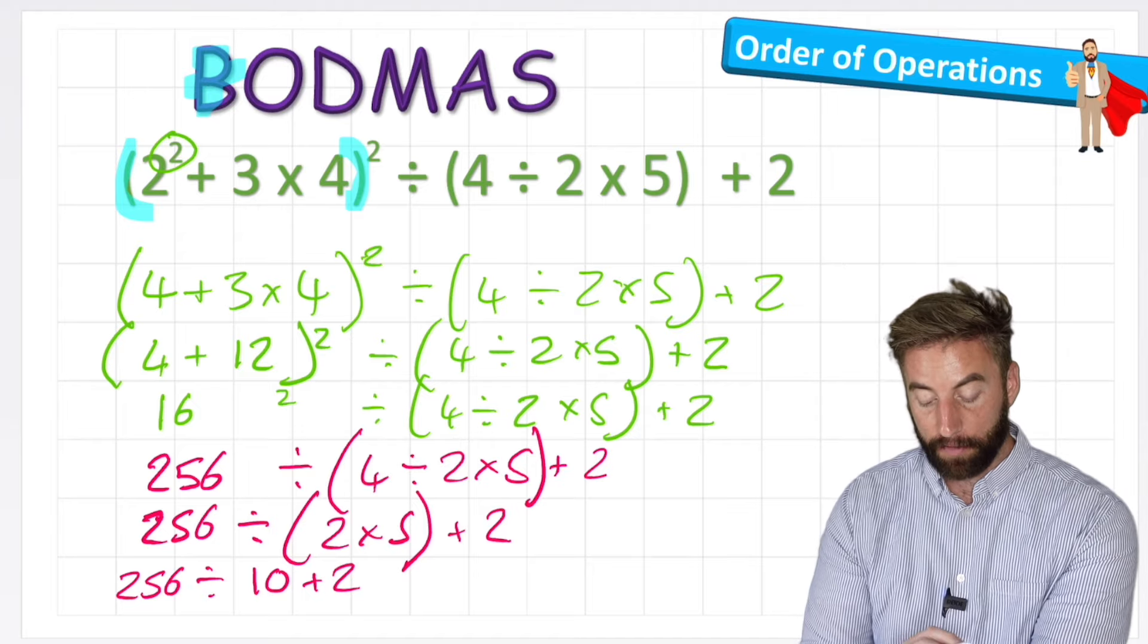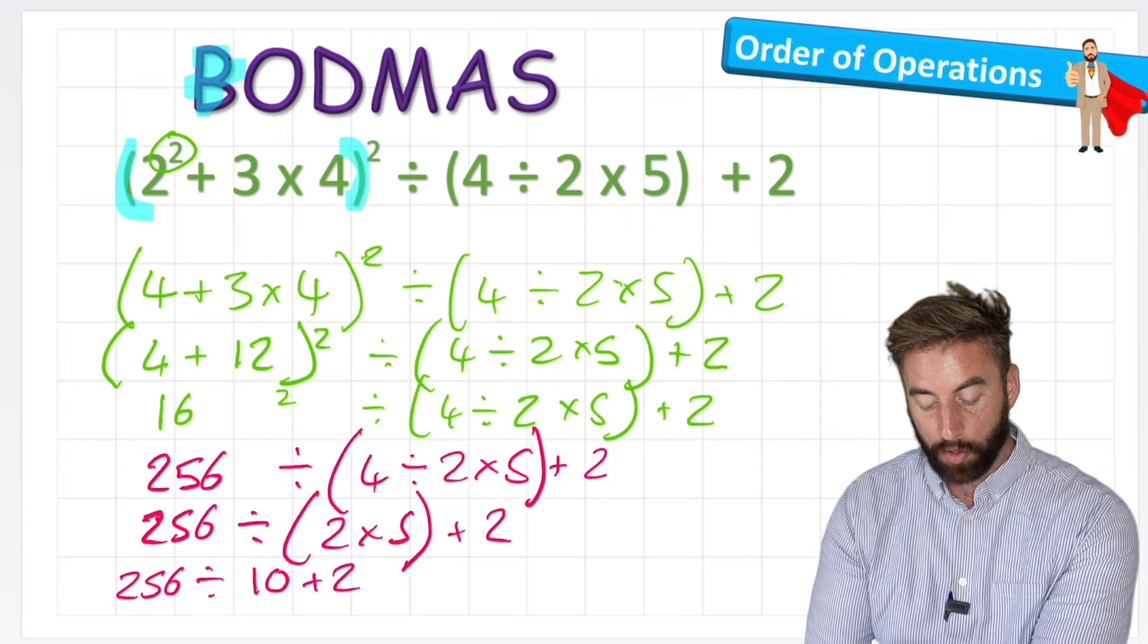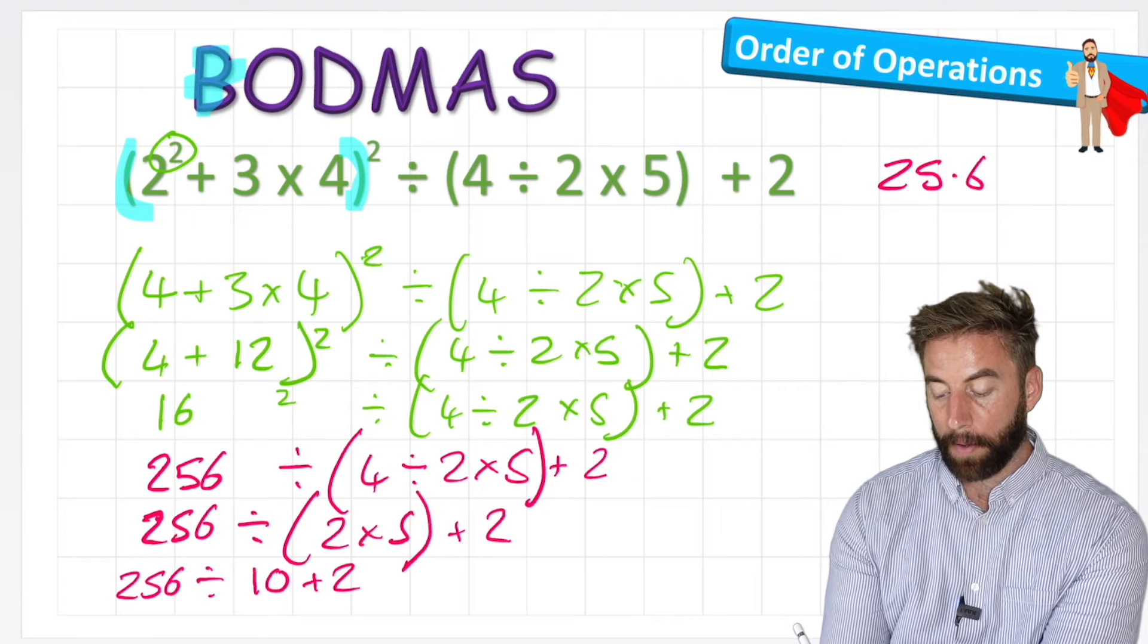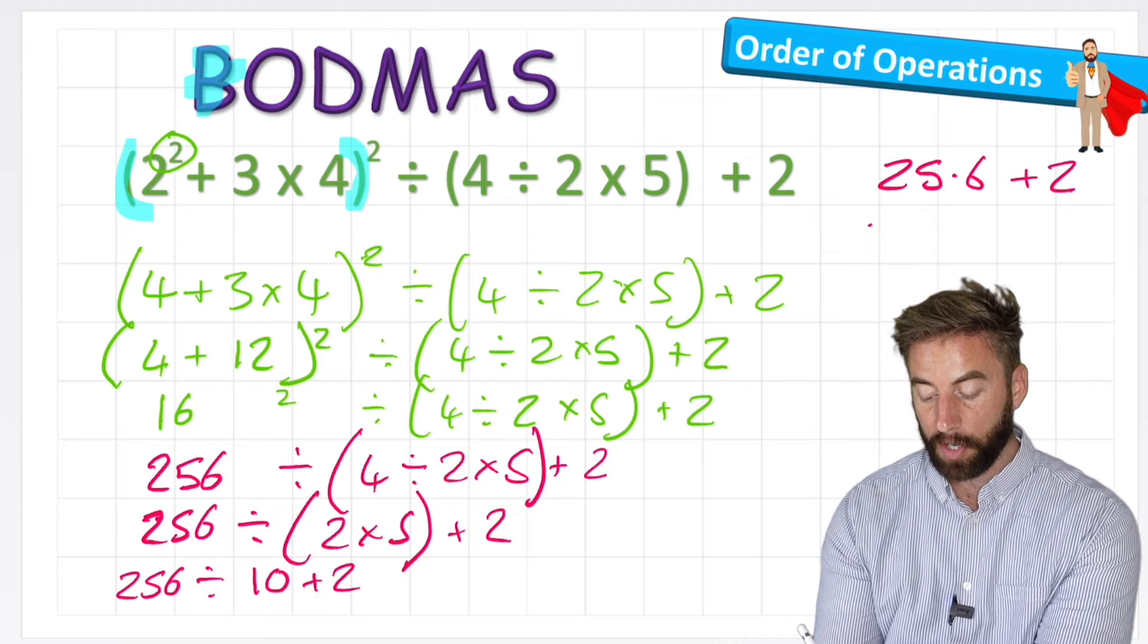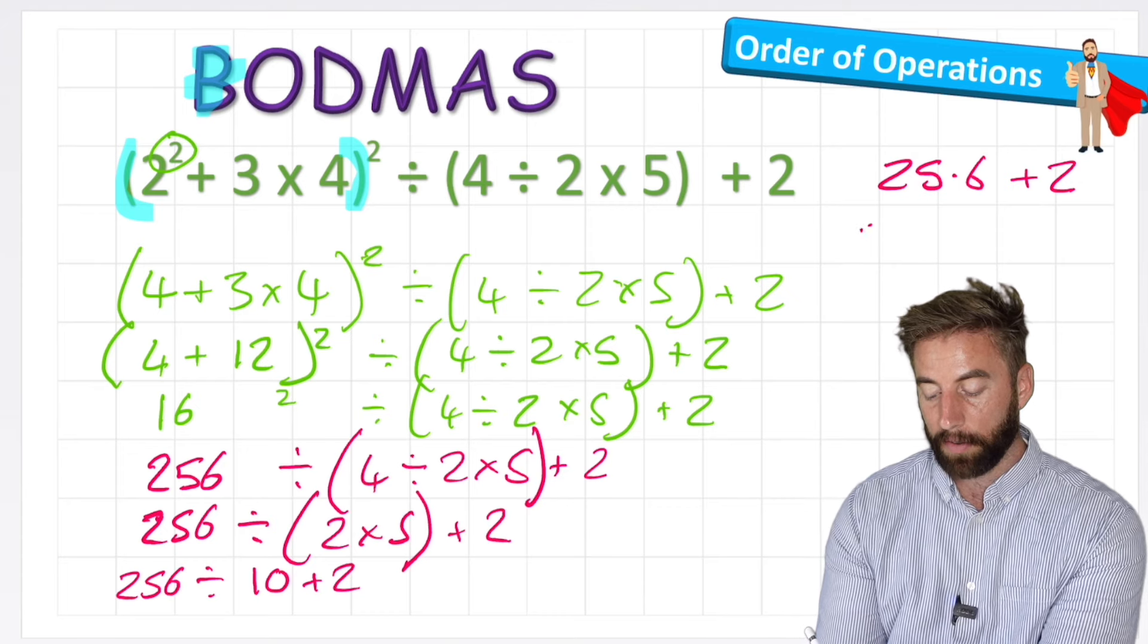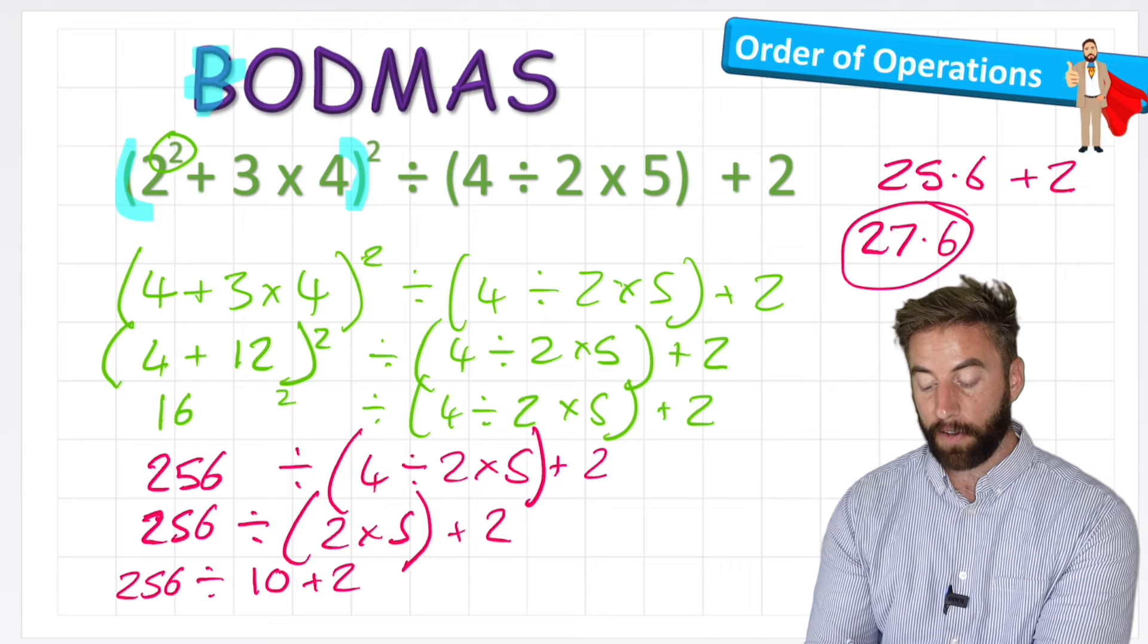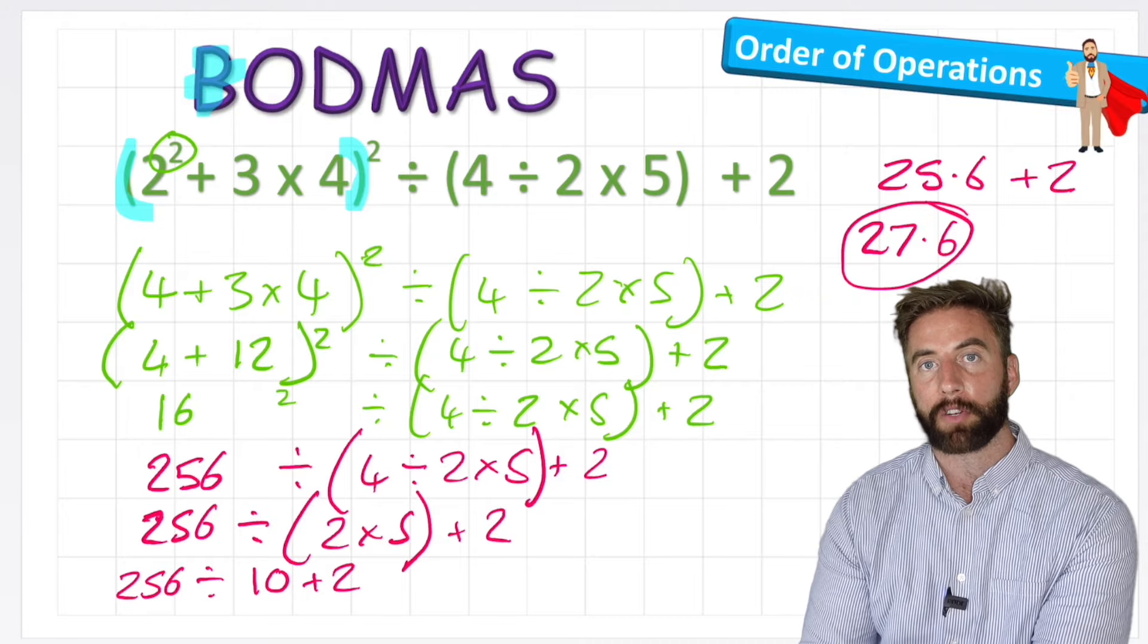And now I can see my question says 256 divided by 10 plus 2. And I'm going to have to work out the division first, because that's first in my BODMAS before the addition. So I can do 256 divided by 10, which would be 25.6, and I'd have my plus 2. Now I'm ready for my final line, where I can solve the final part, the addition, and 25.6 plus 2 equals 27.6, which is my final answer. So the final answer to this expression is 27.6, following my BODMAS rule.